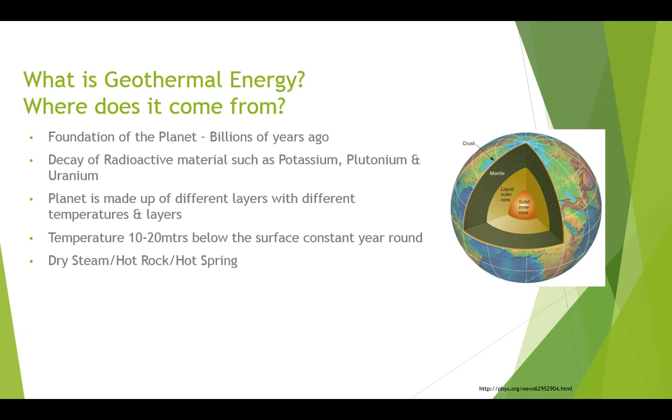The planet is made up of different layers: a solid inner core, a liquid outer core, mantle and crust. We live on the crust and temperatures vary greatly depending on the seasons and surrounding air patterns, but the temperature 10–20 metres below the surface is a constant 25 degrees year round, regardless of these factors.